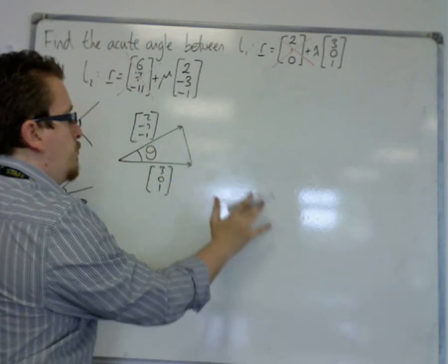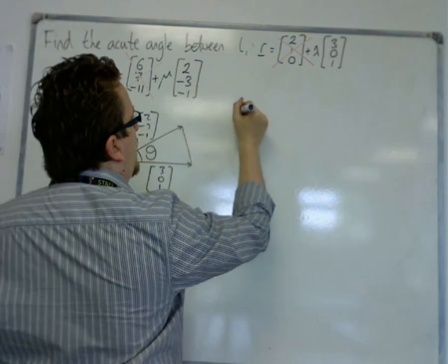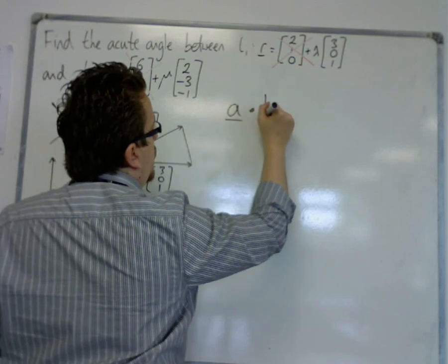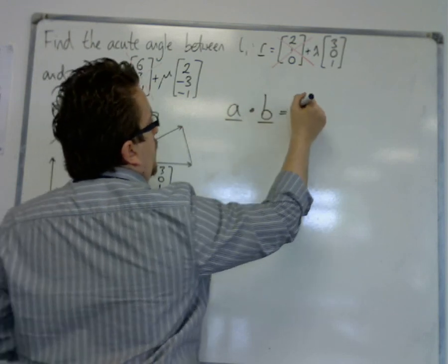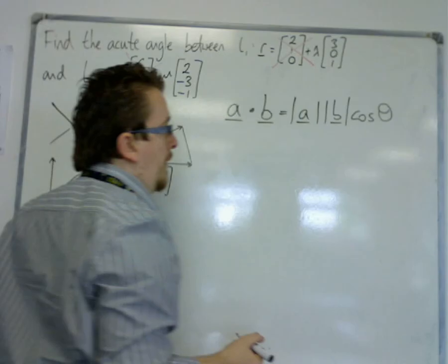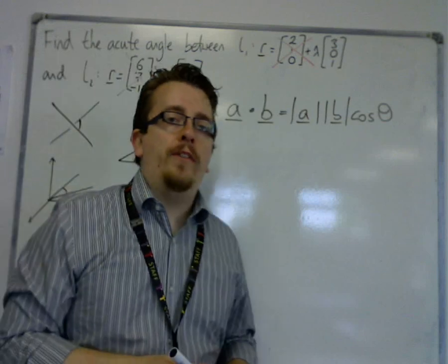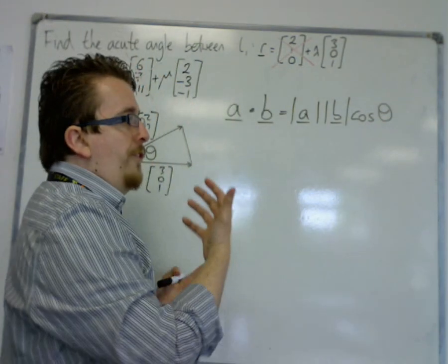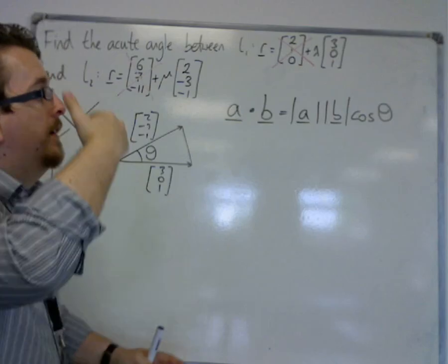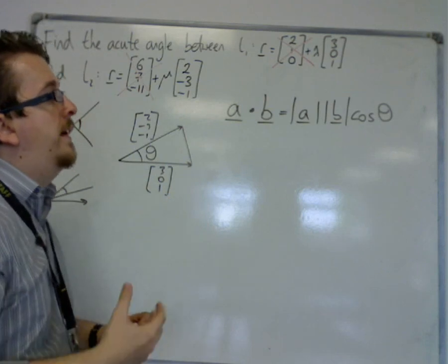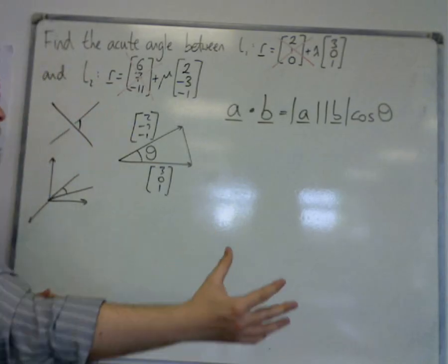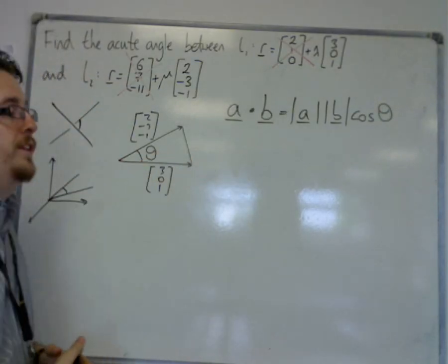The scalar product looks fairly similar to the cosine rule, and it's written as A·B = |A||B|cosθ. It has its origins in the cosine rule: A² = B² + C² − 2BC·cosA. So it does have its origins there, and you can derive this formula from that. That's a bit beyond the scope of this course, but I'd like you to know that it is coming from something you already know.